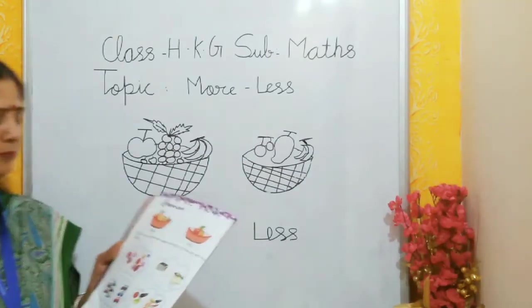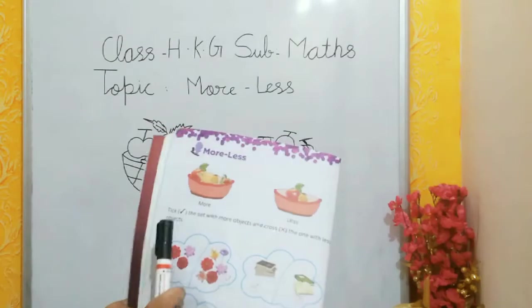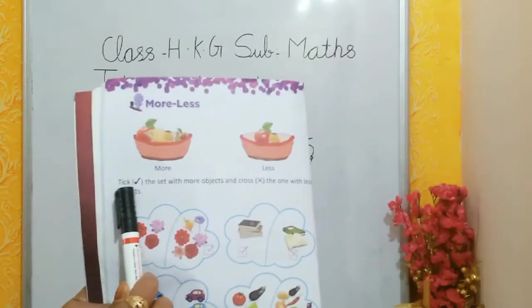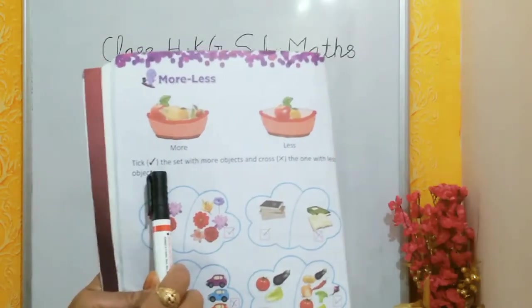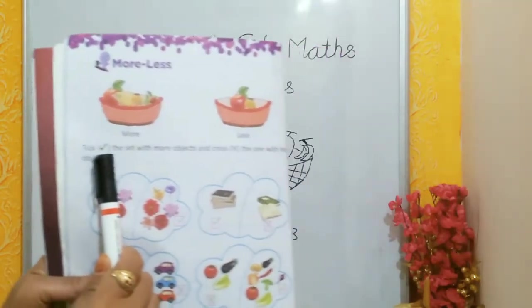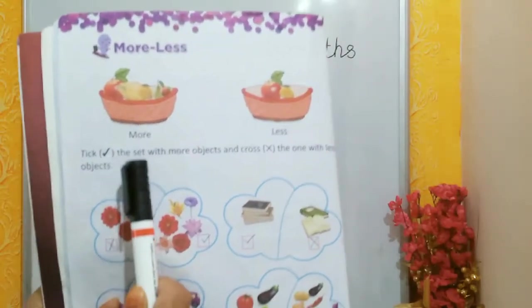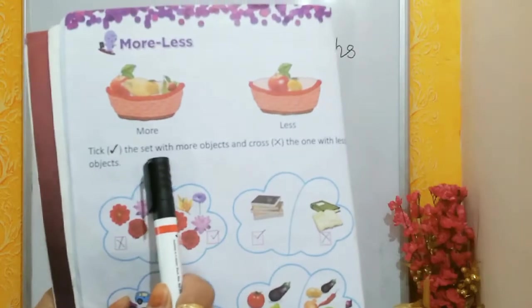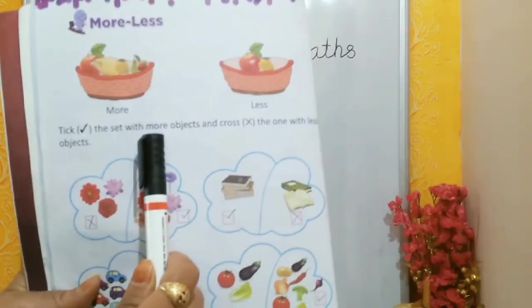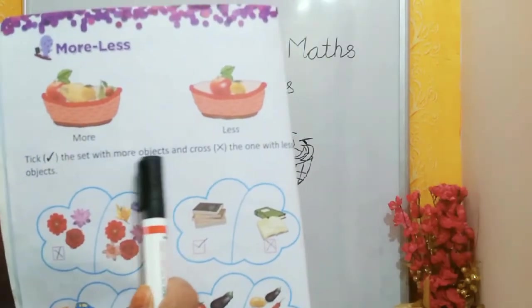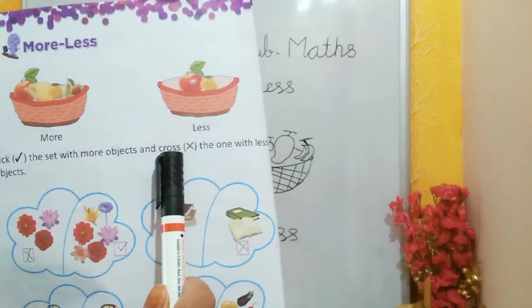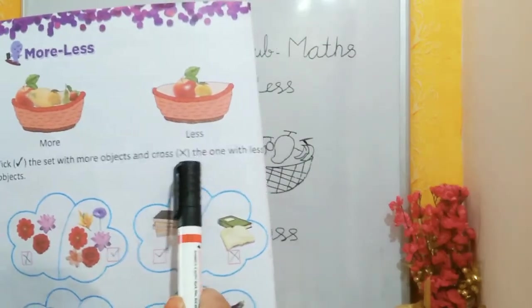Now, T-I-C-K, Tick. Now in the bracket, we have to put the right sign. The sets with more objects get a tick, and the one with less objects gets a cross.